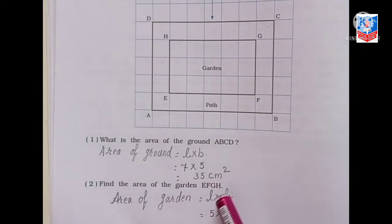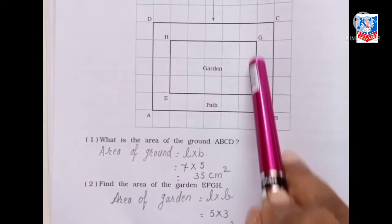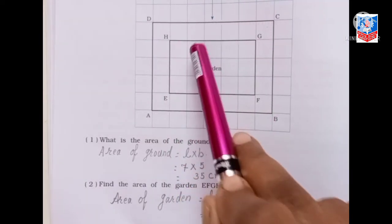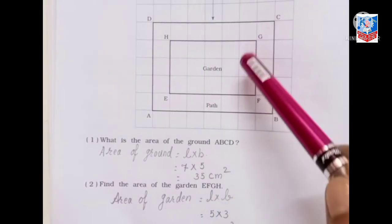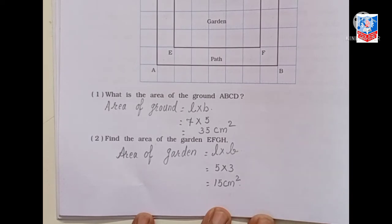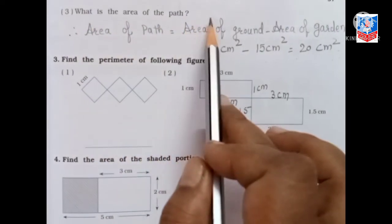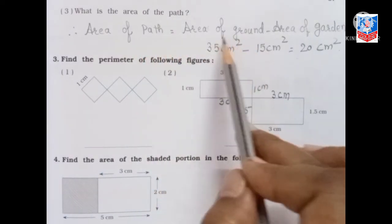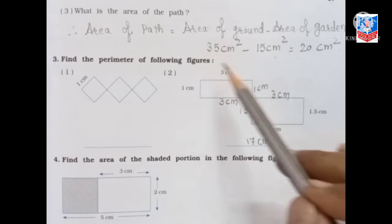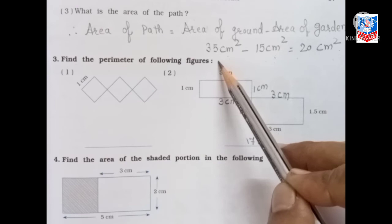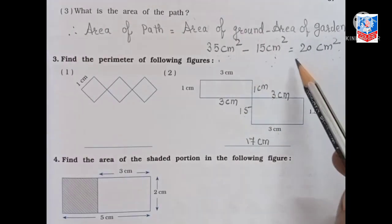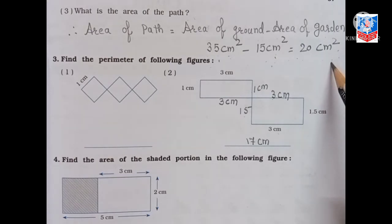Second question: find the area of the garden E, F, G, H. Length is 5 and breadth is 3. Area equals 5 into 3, which is 15 centimeter square. Third question: what is the area of the path? Area of ground is 35 centimeter square and area of garden is 15 centimeter square. We subtract the area of the garden from the area of the ground: 35 minus 15 equals 20 centimeter square, which is the area of the path.